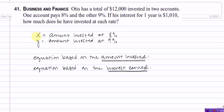Since we're trying to determine how much Otis has in each account, I have stated a variable representing each of these amounts, where X represents the amount invested at 8% and Y represents the amount invested at 9%.